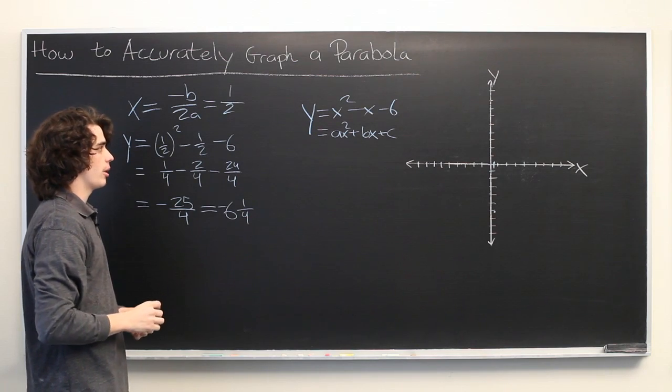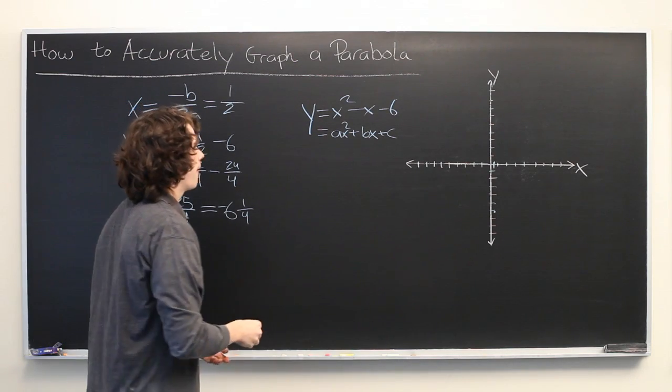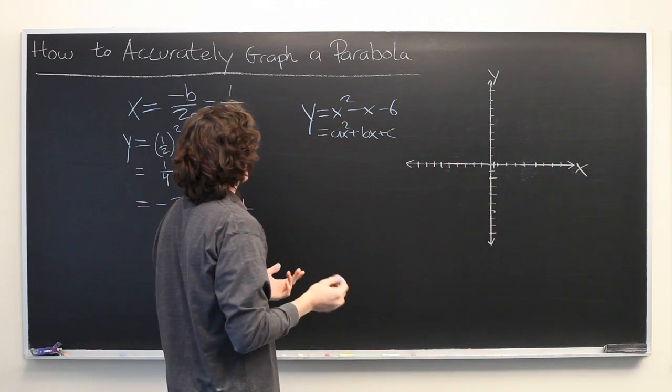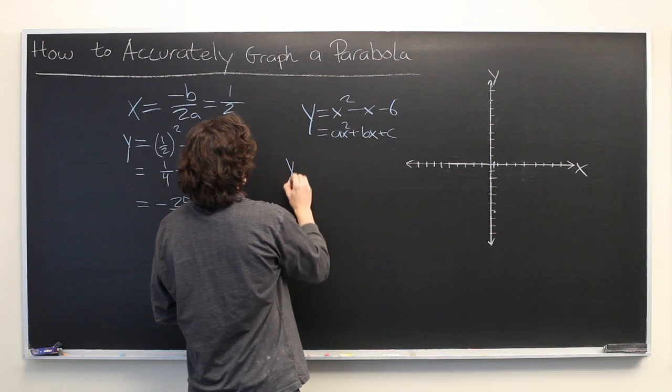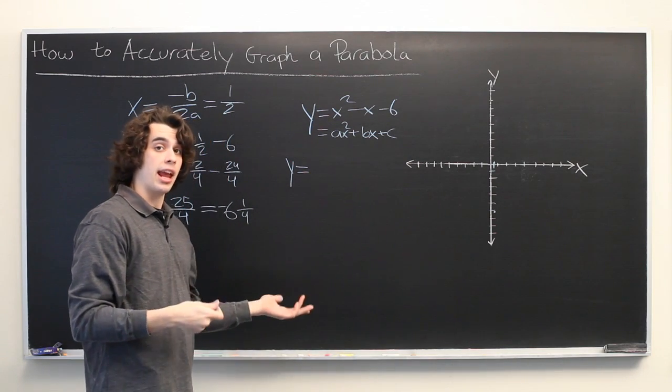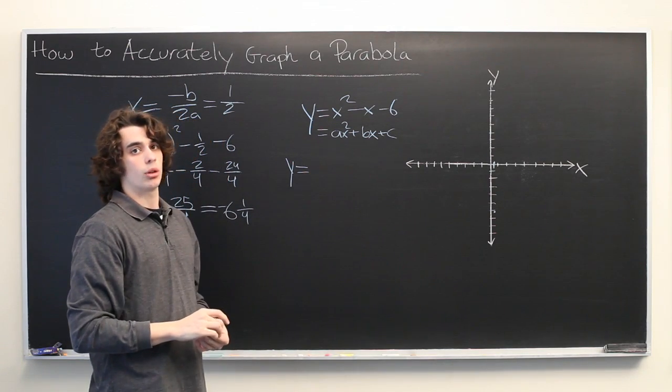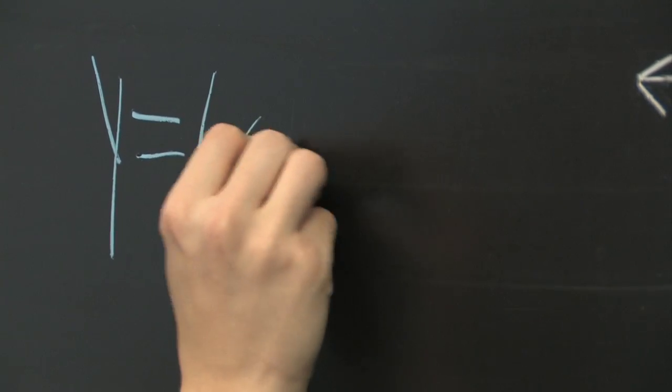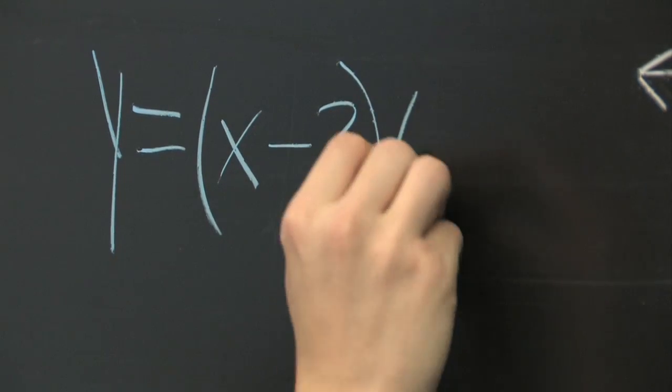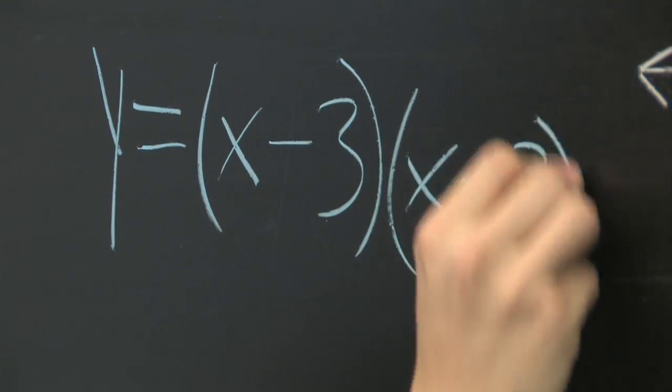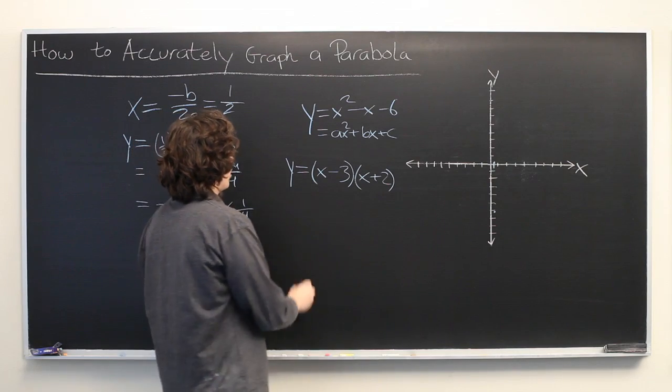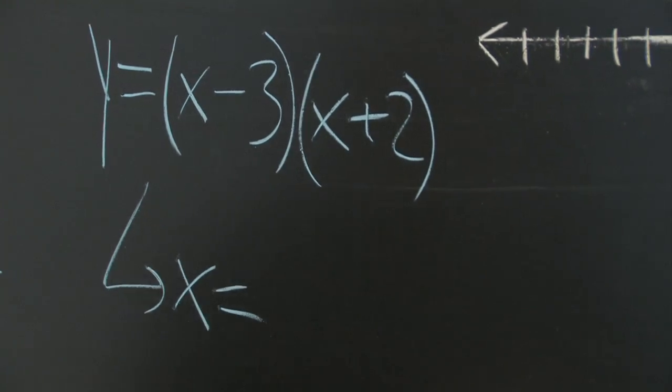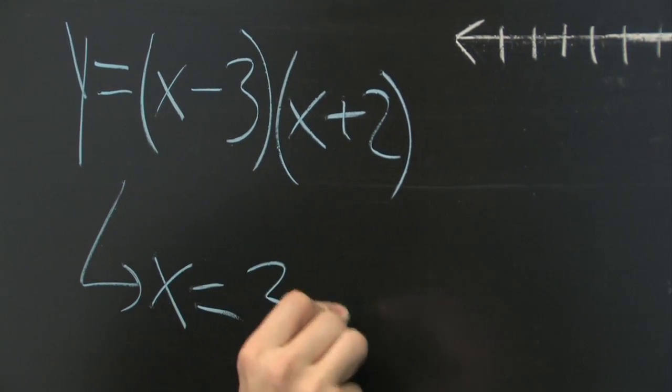So, let's move on to the other piece of information that I said would be helpful, and that is the x-intercepts, or where the parabola crosses the x-axis. And the easiest way to do that is to factor our equation, if it can be factored. If it can't be factored, then we need to use the quadratic formula, but here we'll keep it simple. It turns out this factors to x minus 3 times x plus 2. And what that tells us is our x-intercepts are at the x-coordinate of 3 and minus 2.